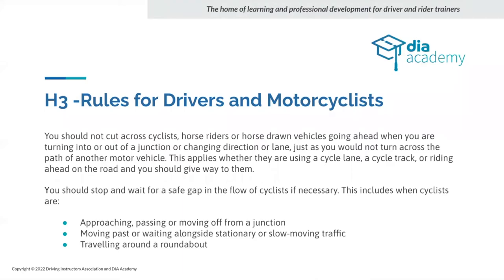We need to be a little more disciplined now about the gaps we keep between cyclists. If we cross the path of a cyclist going straight ahead, we must not make them use the five S rule: Stop, Slow down, Swerve, Shake their fist, or Swear at you. If you're going to make them do any of those five S's, you've got the judgment wrong. That's what the examiner is going to look for.